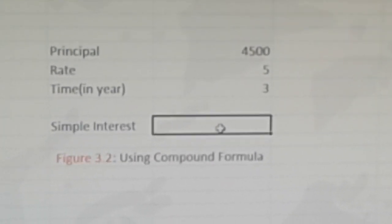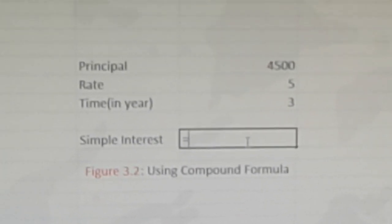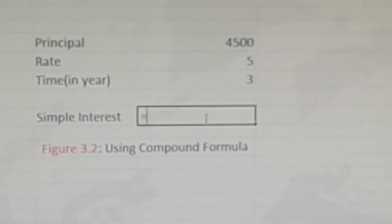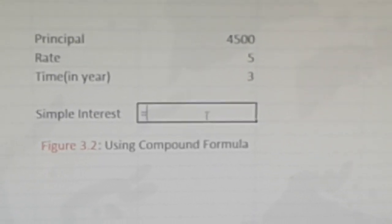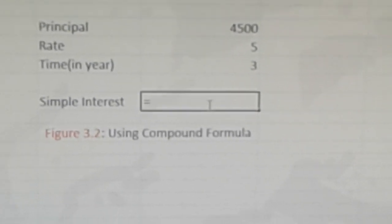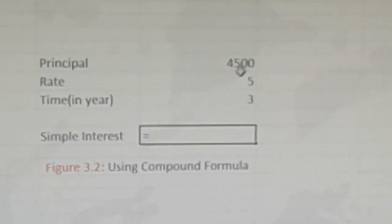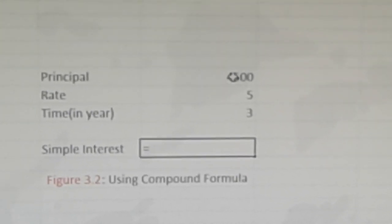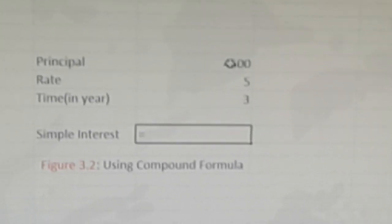First, I will press equals, and here we have to calculate simple interest. The formula for simple interest is equal to principal times rate times time divided by 100. So first, we will click on the value next to the principal.